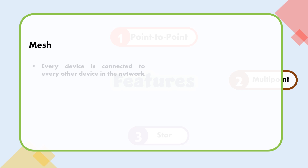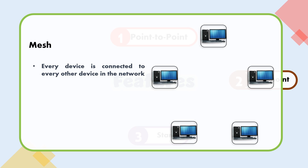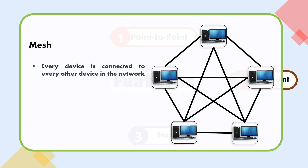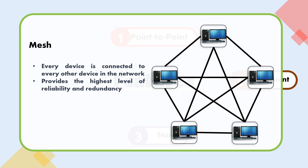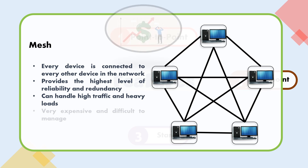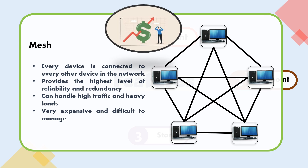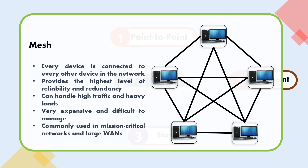Mesh: Every device is connected to every other device in the network. It provides the highest level of reliability and redundancy, and can handle high traffic and heavy loads. However, it is very expensive and difficult to manage. It is commonly used in mission-critical networks and large WANs.